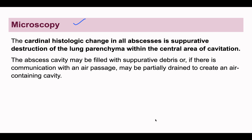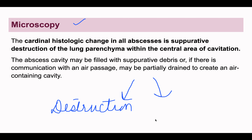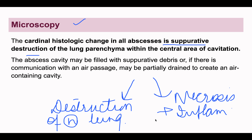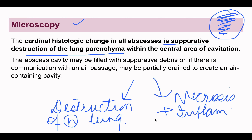On microscopy, the key histological change is suppuration. There will be destruction of all normal lung parenchyma — you will not be able to identify normal parenchyma — along with lots of necrosis and various inflammatory cells like neutrophils. The cardinal histological change is suppurative destruction of the lung parenchyma within the central area of cavitation. The abscess cavity can be filled with suppurative debris or can have a connection with the air passage and be partly drained.